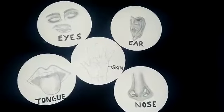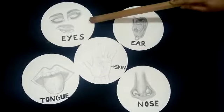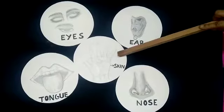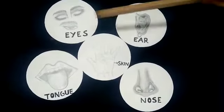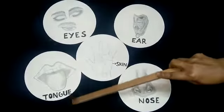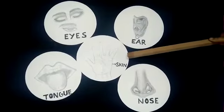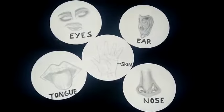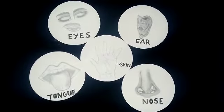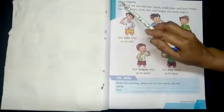Hello children. In the previous class we learnt about Amit's sense organs: eyes, ear, skin, tongue and nose. Eyes, ear, nose and tongue are the sense organs on his body, but skin is the sense organ which is covering the whole body. So today we will study about our sense organs in detail through examples. Let us start the chapter: sense organs.